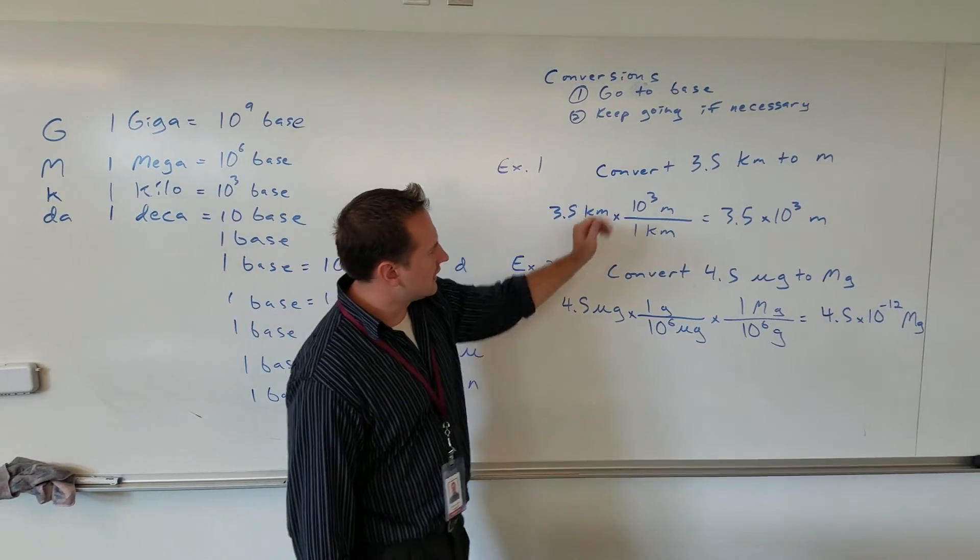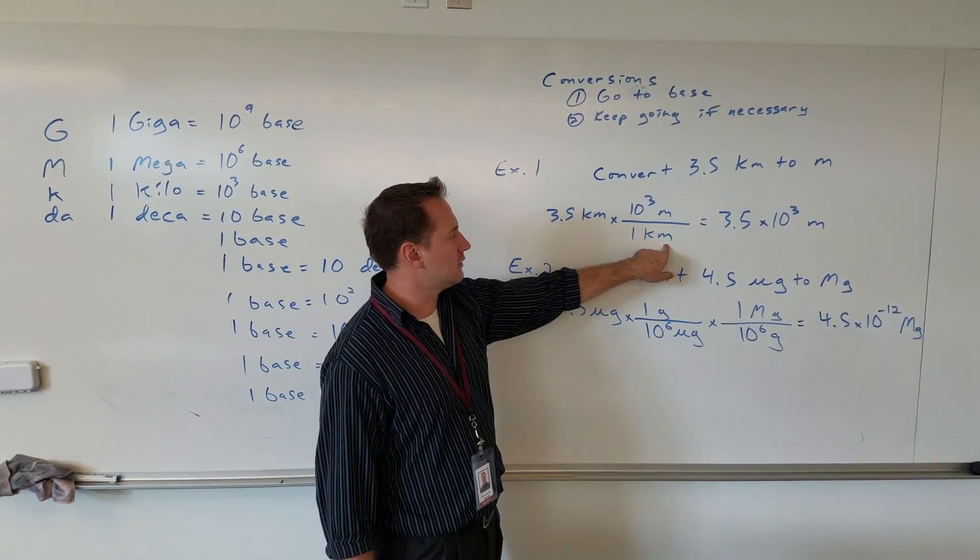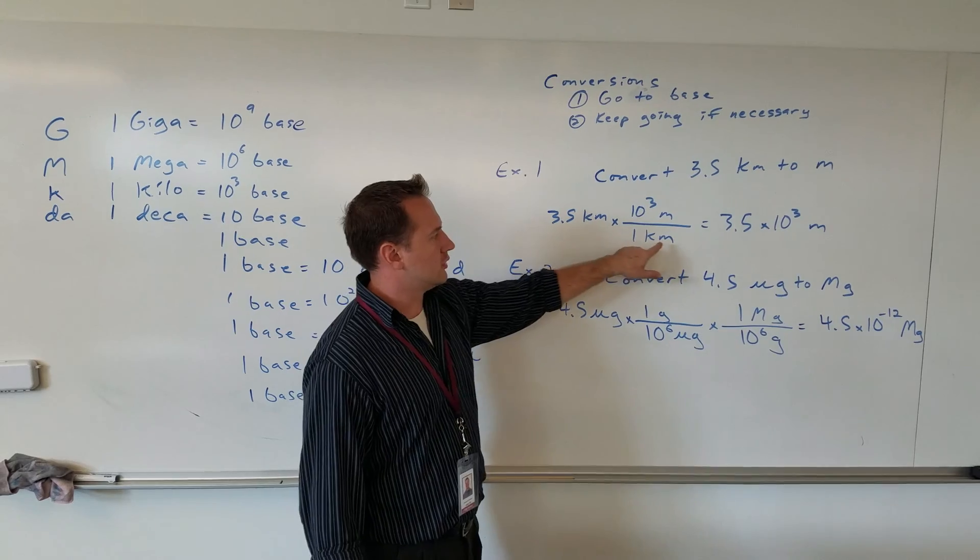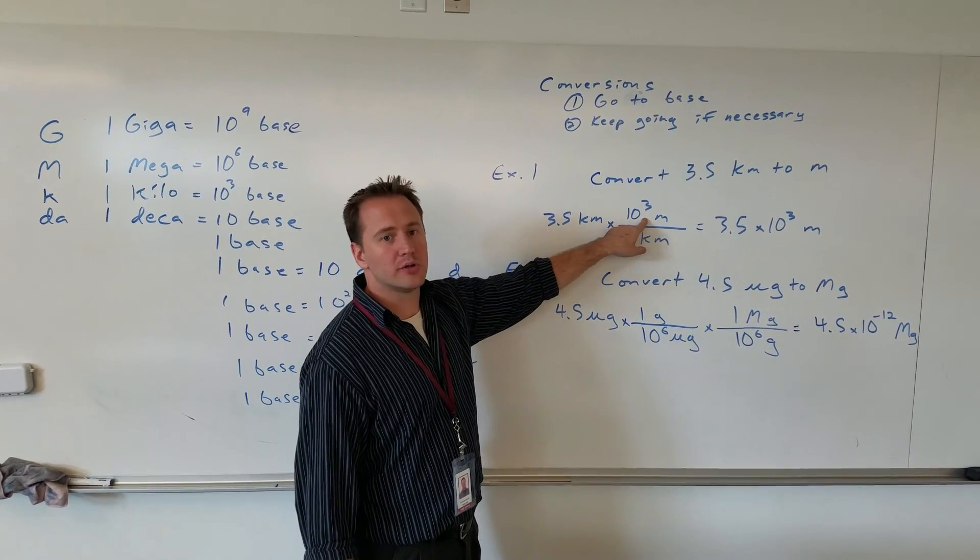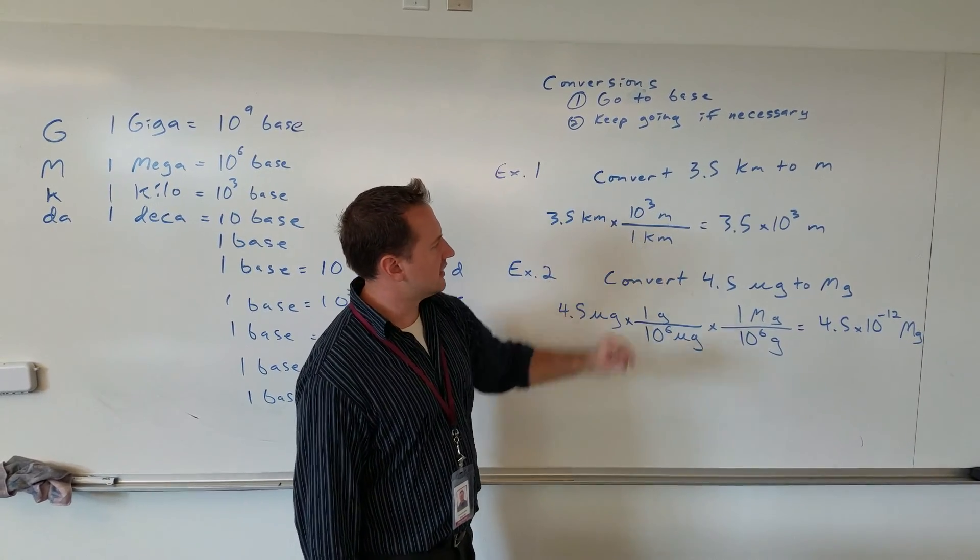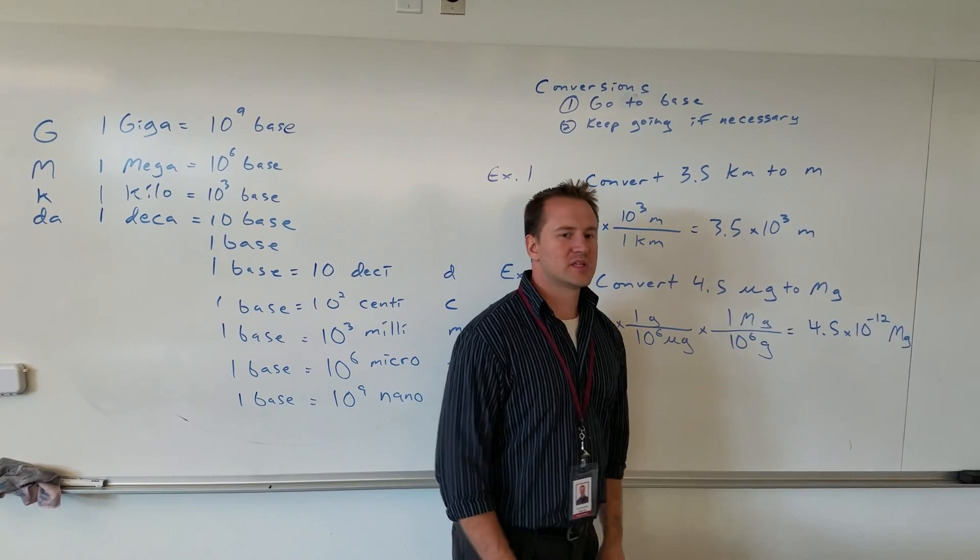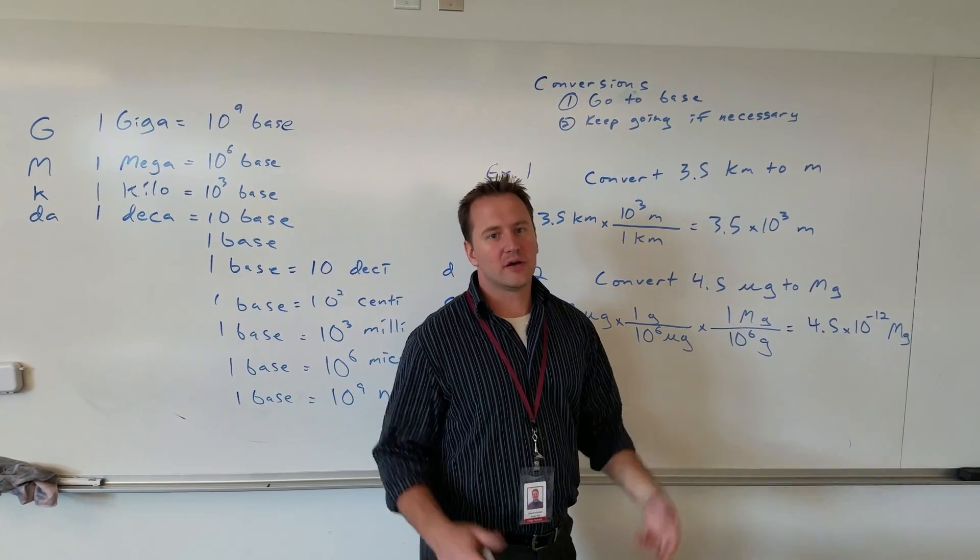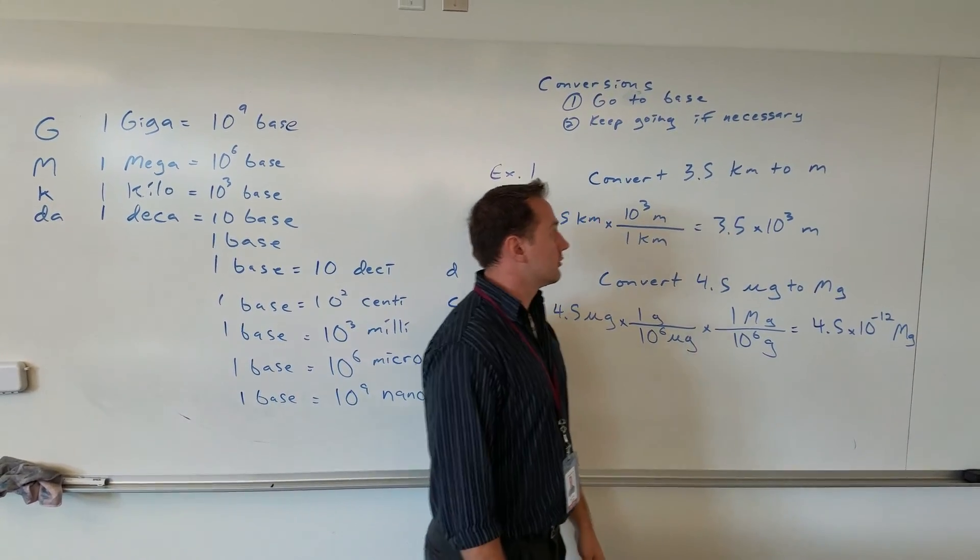I write down the conversion factor. I put the units I'm trying to cancel out on the bottom, so kilometers goes on the bottom, and where I'm going on the top. When I multiply this out, I get 3.5 times 10 to the third meters, or 3,500 meters in 3.5 kilometers.